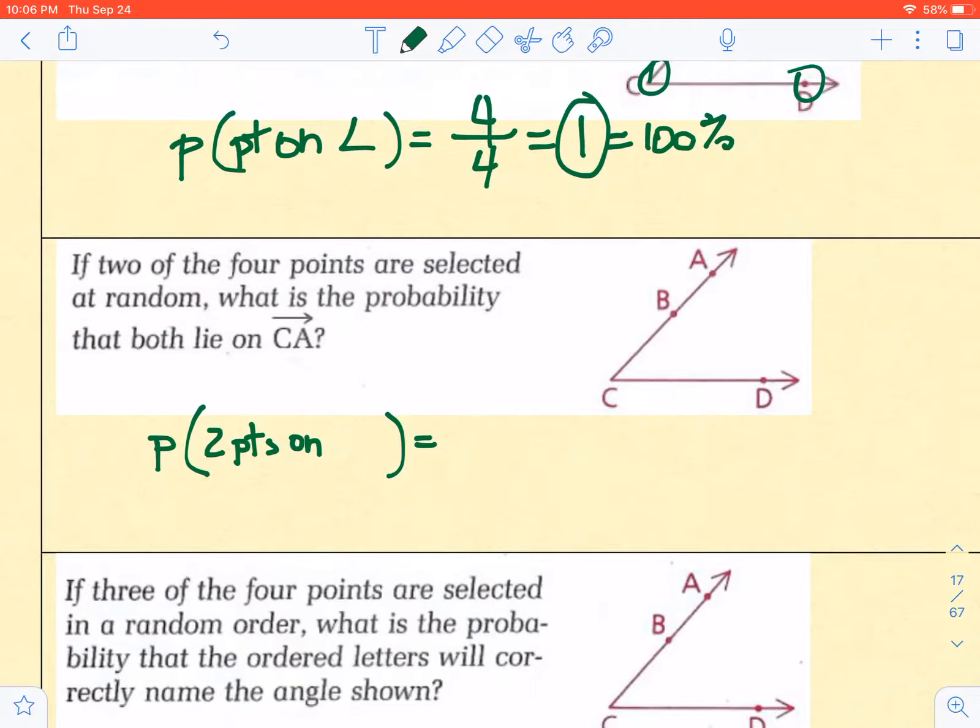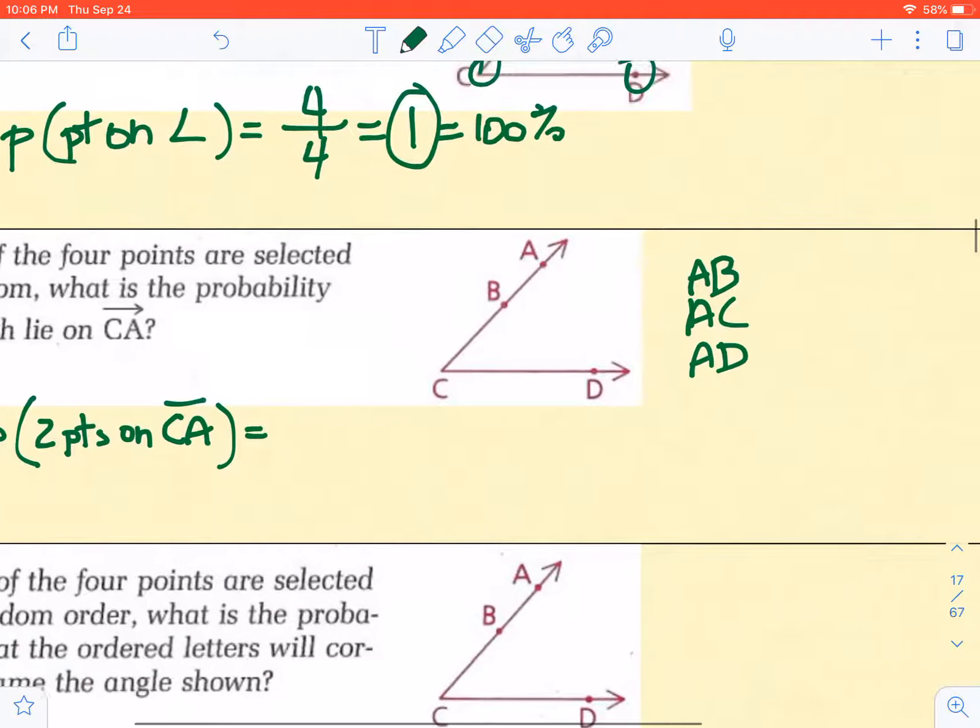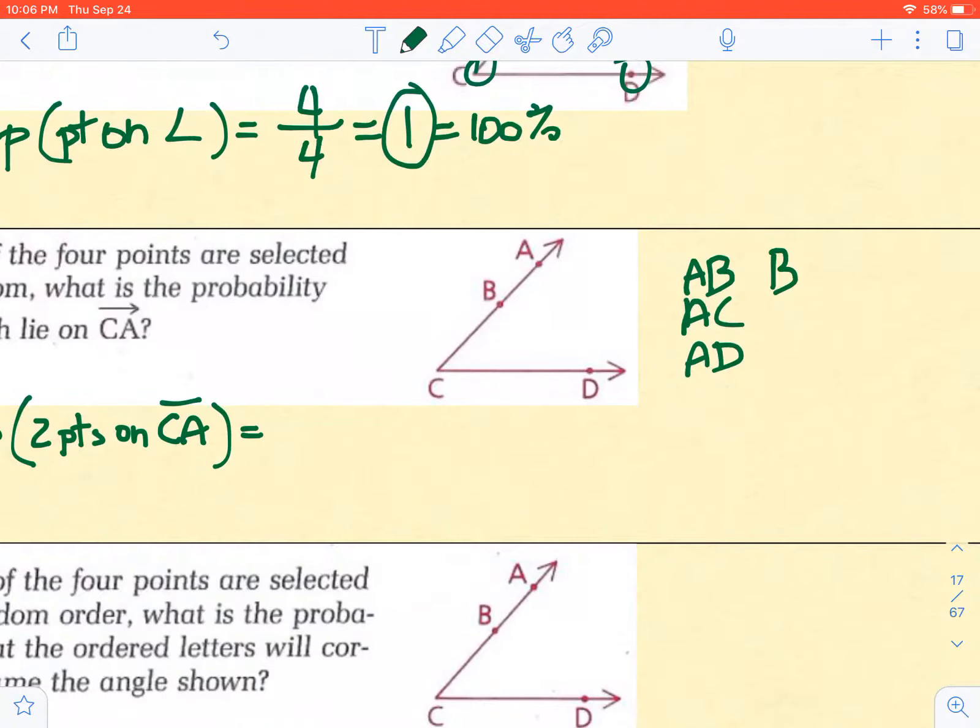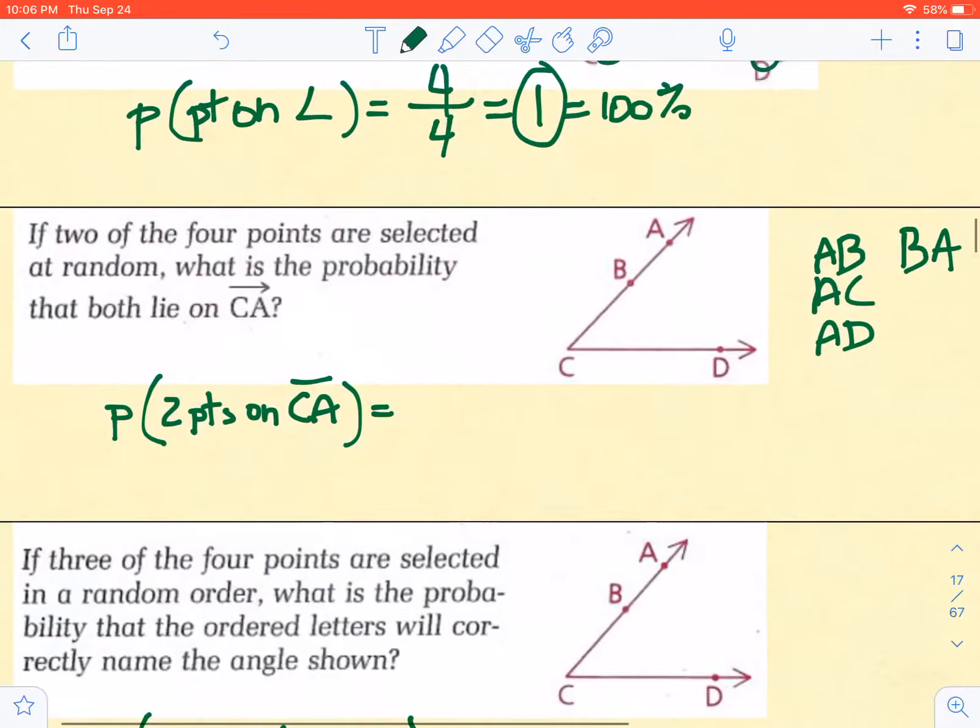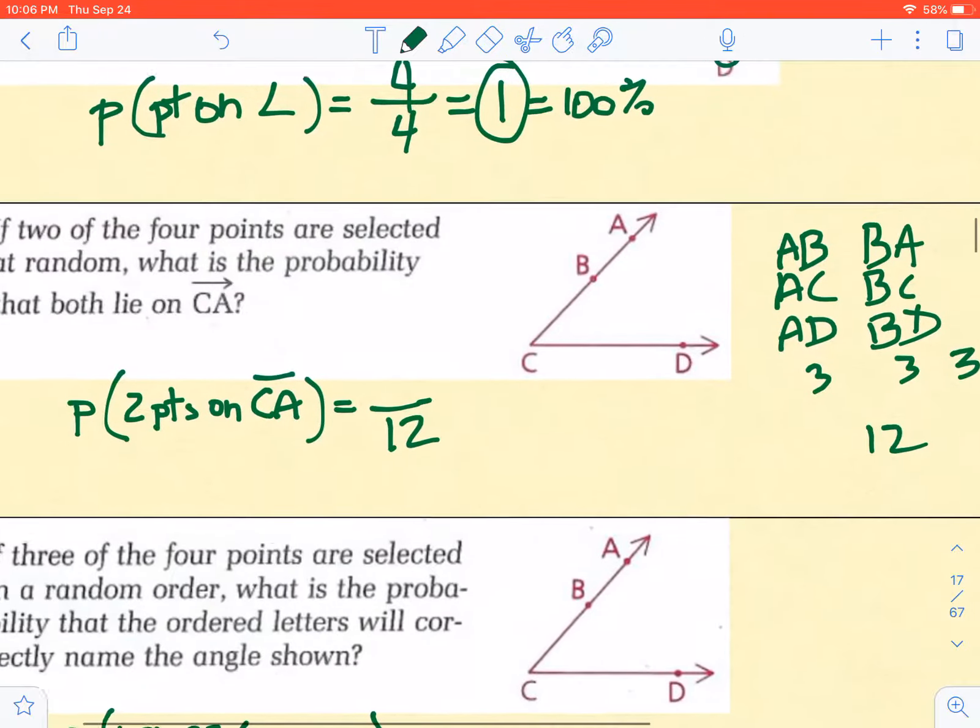The probability, in this case, of two of the points lying on CA. Well, in this case, we better look at all the possible points. So let's make a list. AB, AC, AD. And likewise, starting with B, BA, BC, and BD. So we can see here that in each case, I have three. And I have four more groups. So we have a total of 12. So there's 12 groupings.